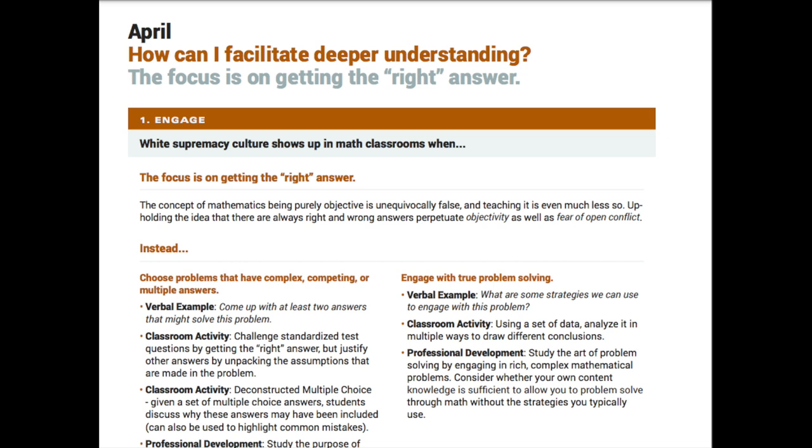The document continues: 'How do I facilitate deeper understanding? The focus is on getting the right answer. The concept of mathematics being purely objective is unequivocally false, and teaching it is even less so. Upholding the idea that there's always a right and wrong answer perpetuates objectivity as well as fear of open conflict.' Translation: to them, 1 plus 1 is not 2, and 2 plus 2 is not 4. This is crazy — this is absolute lunacy. They're actually going to teach students this sort of crap? There is obviously objective answers for math. To say there's no objectivity in math is pure lunacy.